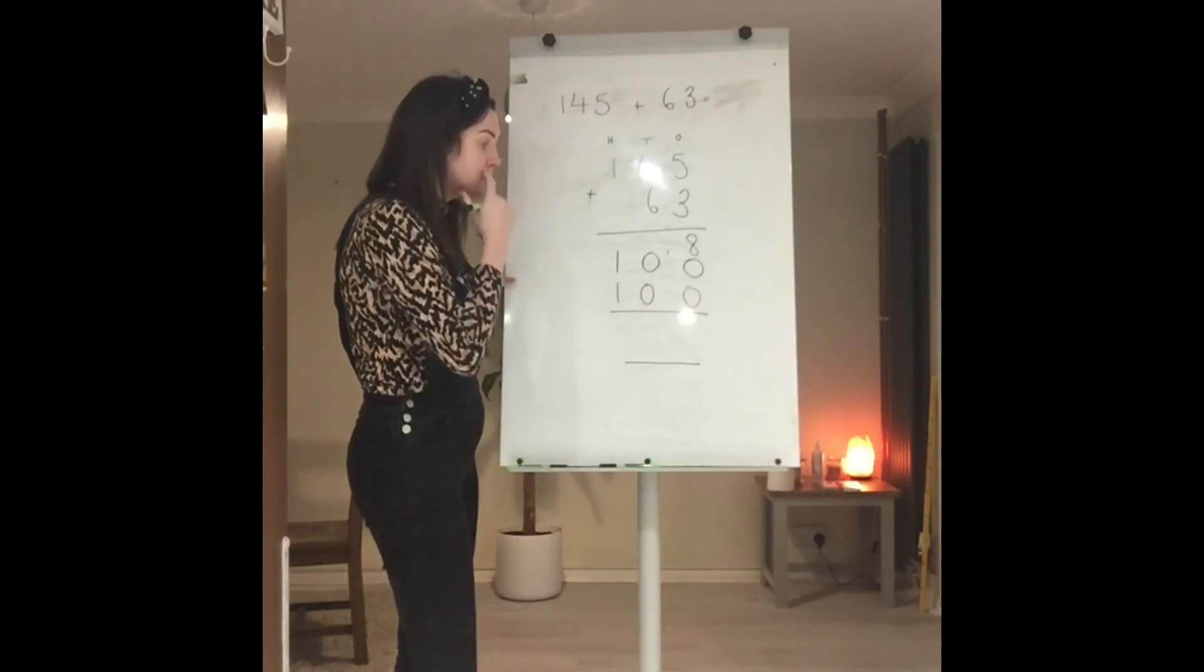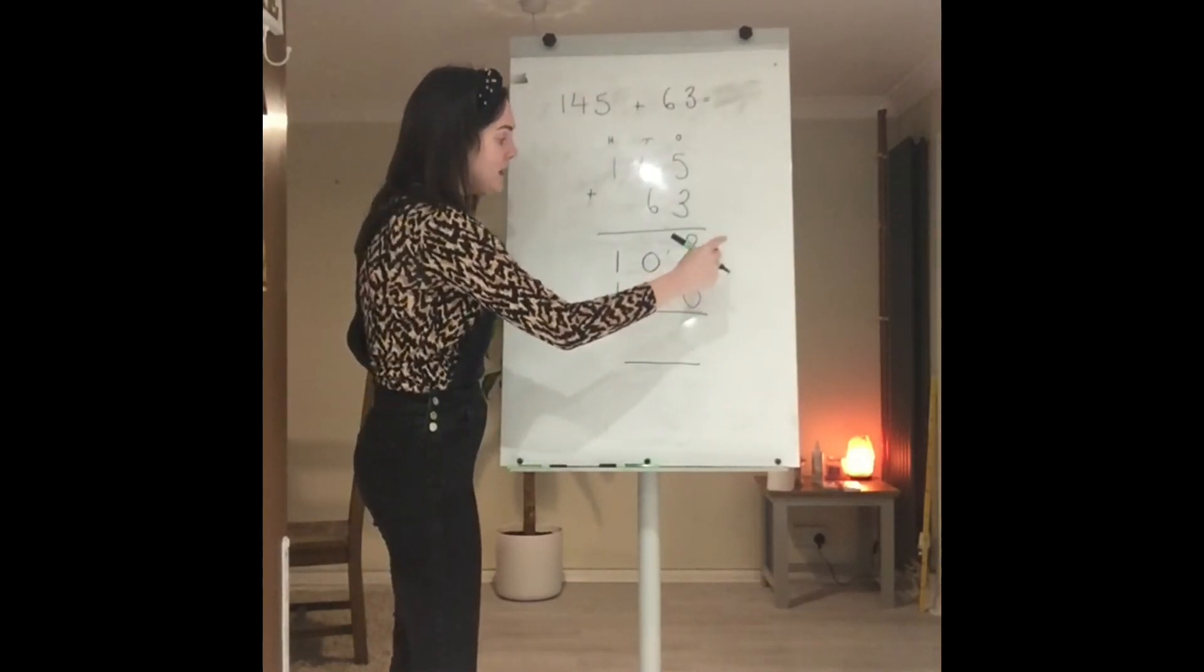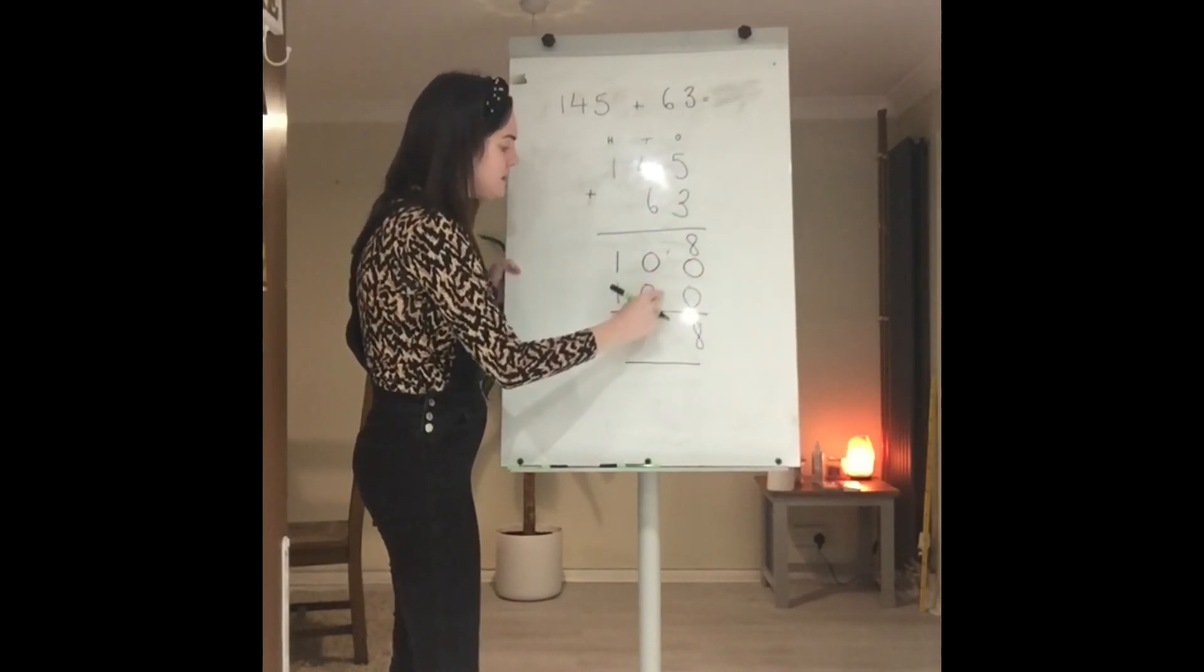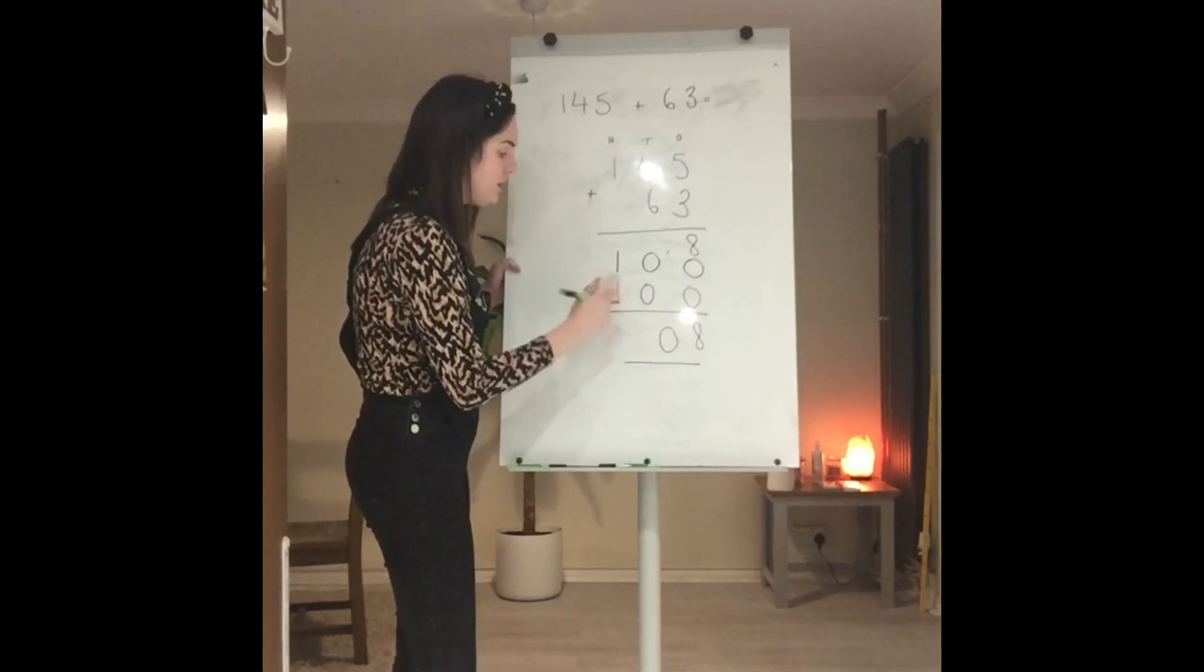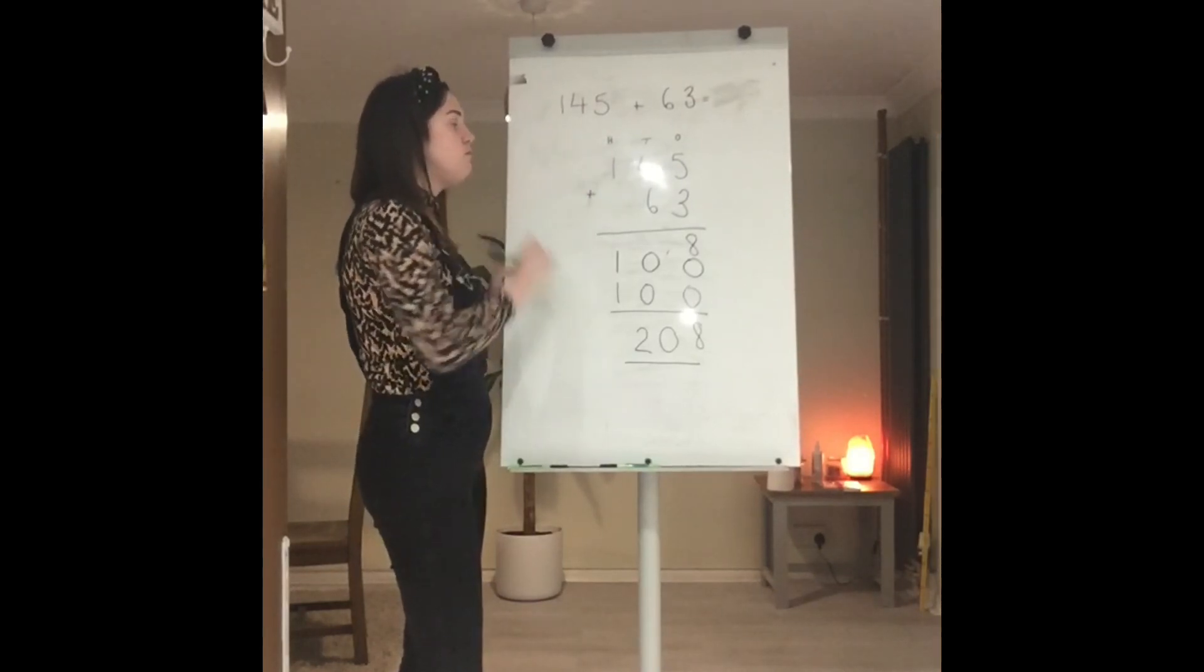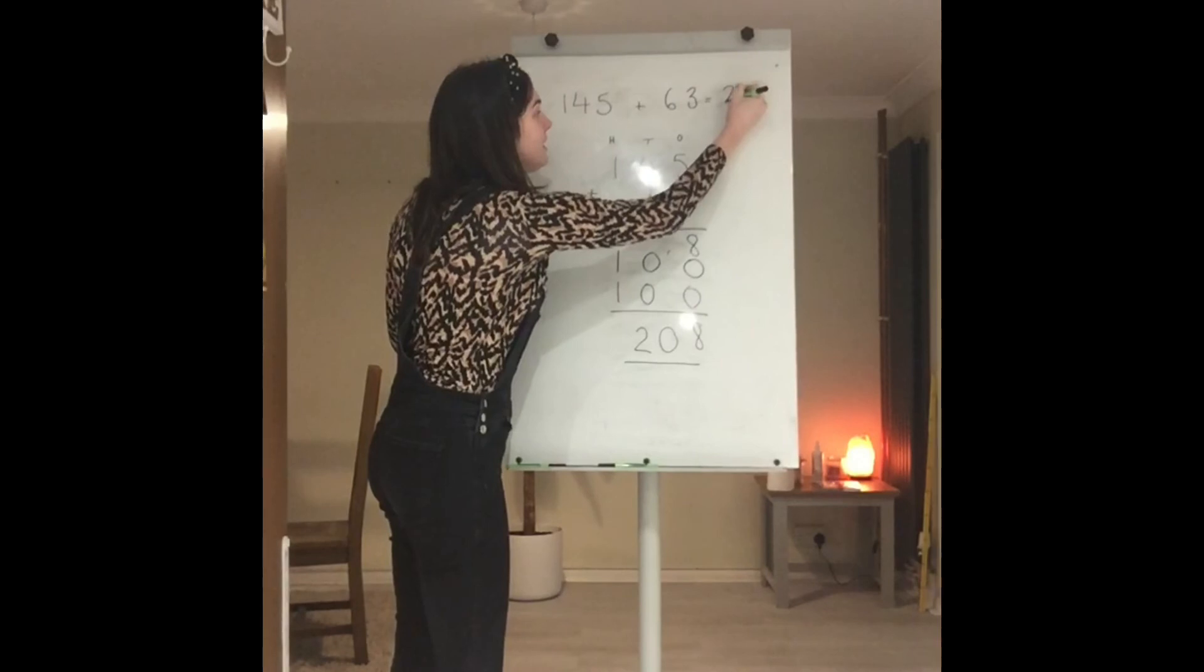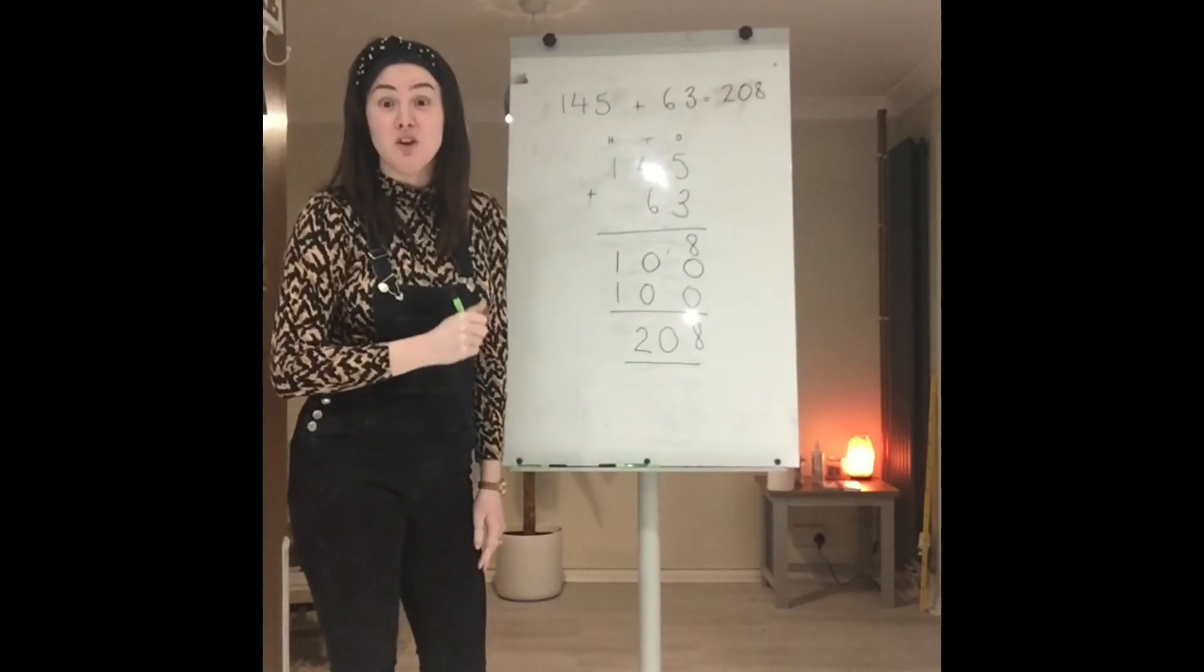Now we're going to total up our three numbers here to find our answer to our calculation. 8, 0 and 0 is 8. I've got nothing in my tens column here. And I've got 100 and 100 is 200. Our total to 145 plus 63 is 208. See? Easy peasy. You guys have got this.